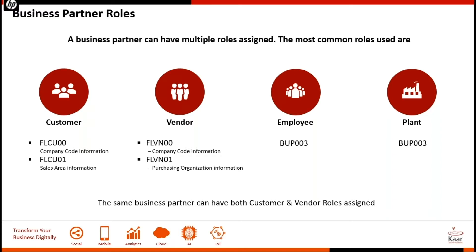Likewise, we have for vendor — specific roles for company code and specific roles for business purchasing organizations. And also we have specific roles for employees, because the employee in a business partner is treated as a business contact person, so that he can act as a sales contact person or as a buyer for internal activities as well as for external parties.